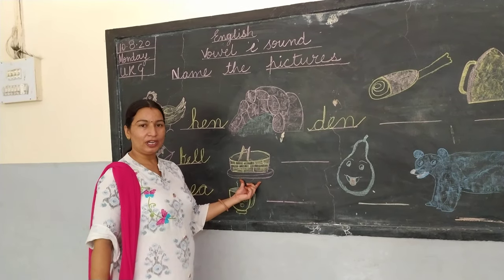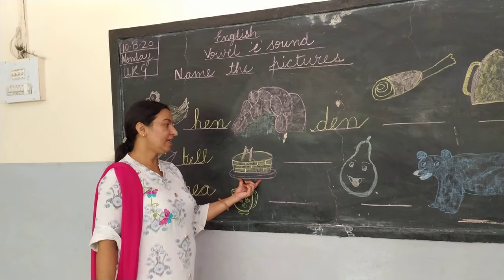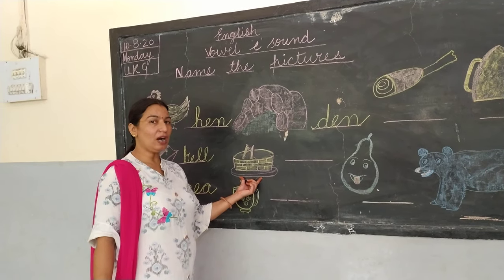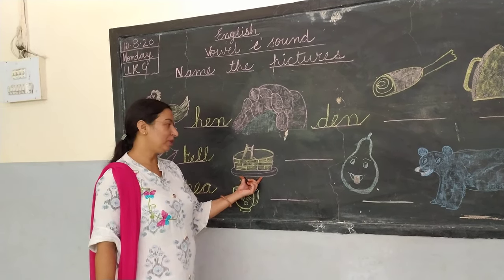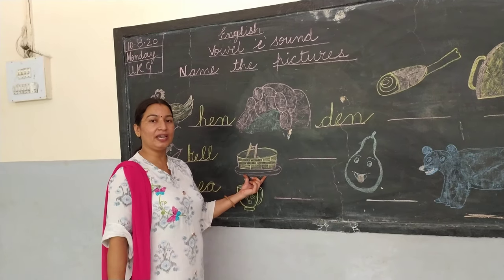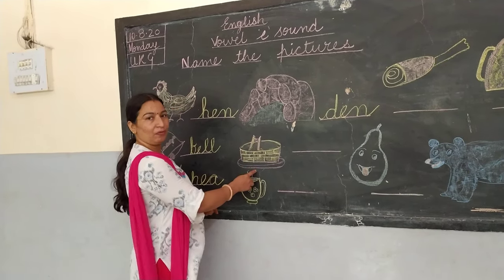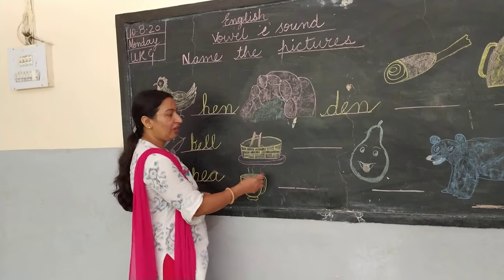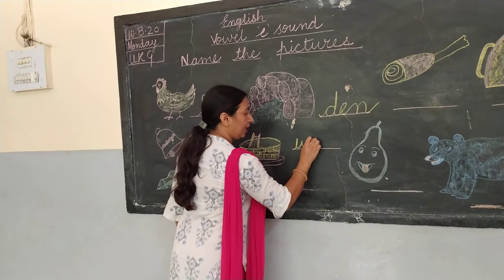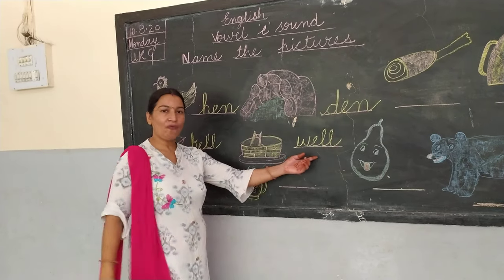Now see this picture. This is a well. When you go to a village, you draw water from a well — a kuhwe. So the spelling of well is W-E-double-L, well.